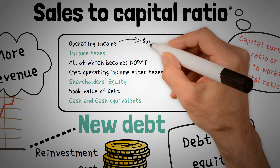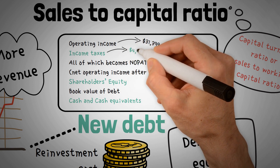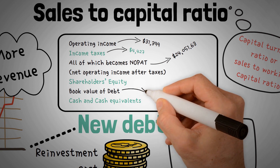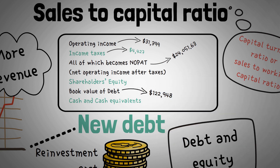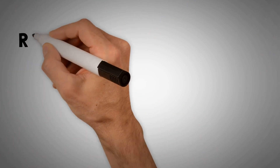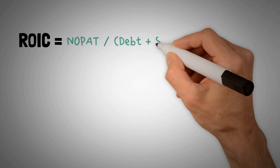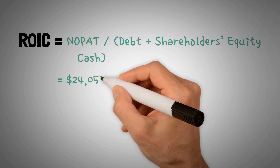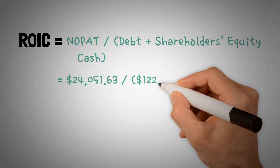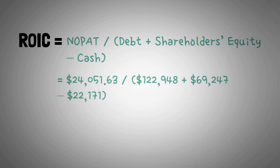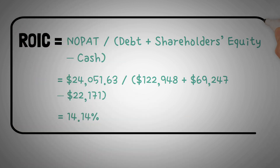Operating income: $31,399. Income taxes: $4,427. NOPAT: $24,051.63. Book value of debt: $122,948. Shareholder equity: $69,247. Cash and cash equivalents: $22,171. Using the formula — ROIC equals NOPAT divided by debt plus shareholders' equity minus cash — ROIC equals $24,051.63 divided by $122,948 plus $69,247 minus $22,171, equaling 14.14%.